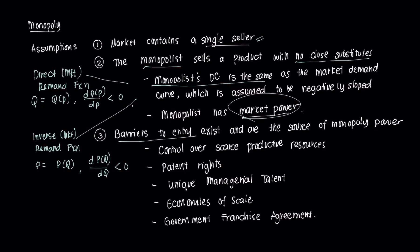These barriers come in many ways. First, a monopolist could potentially have control over scarce productive resources. A firm that controls the entire supply of a vital factor of production will likely control production for the entire industry. For example, if a firm had a huge control over the spectrum, they would most likely have a huge control over the entire mobile industry. Another barrier is patent rights — a legal barrier to entry. It's an exclusive right granted to an inventor by government to a product or process they invented, commonplace in medicine or pharmaceuticals, giving exclusive right to sell the product for a limited amount of time, so they have monopoly power during that time.